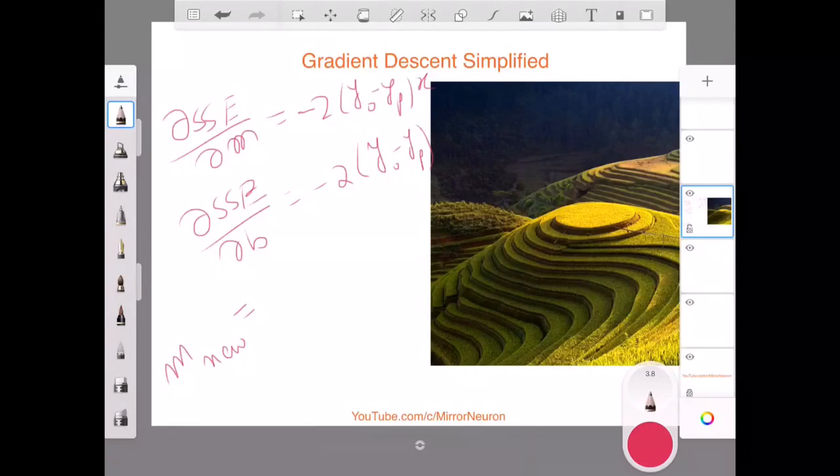So we have calculated the sum of squared error dependency on m and the sum of squared error dependency on b, that means dependency on the slope and the intercept. And we got these two expressions.